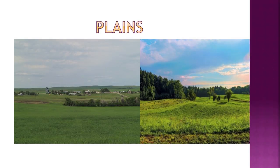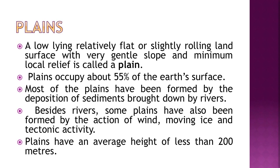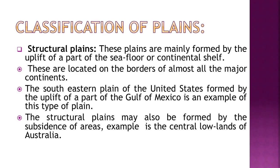Plains are low-lying, relatively flat or slightly rolling land surfaces with very gentle slope and minimum local relief. They occupy 55% of the earth's surface. Most plains have been formed by deposition of sediments brought down by rivers, though some have also been formed by wind, moving ice and tectonic activity. Plains have an average height of less than 200 meters.